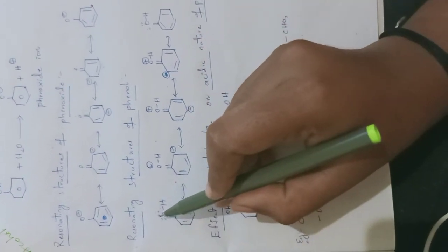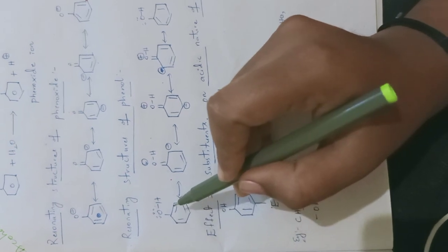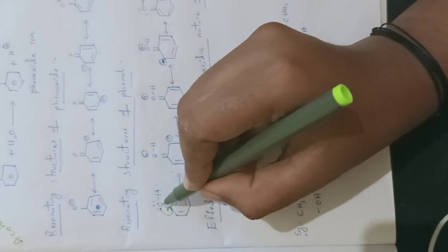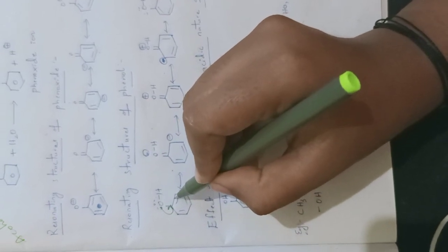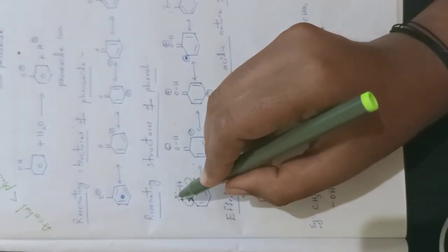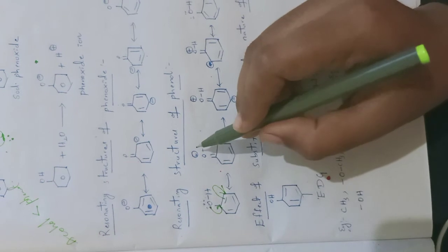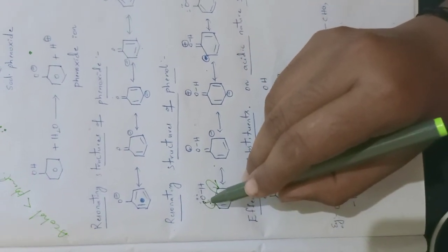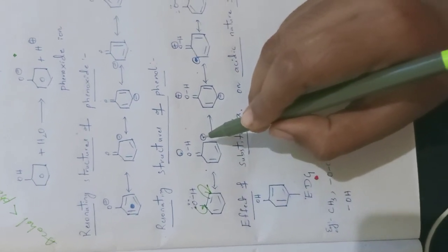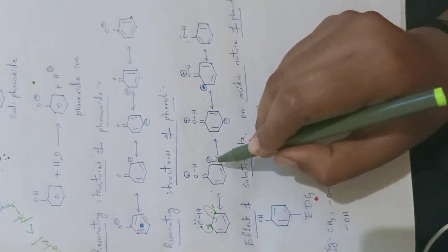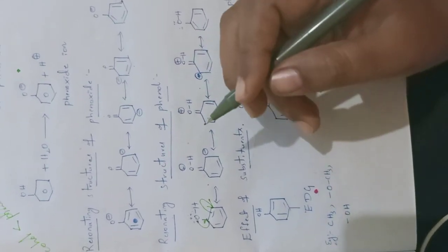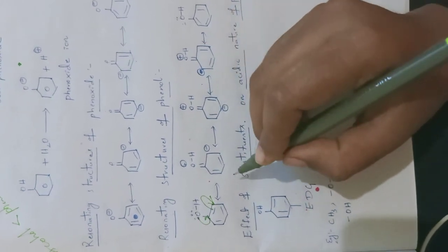Phenol contains oxygen with two lone pairs of electrons. When this lone pair of electrons makes a pi bond between carbon and oxygen, this pi bond moves to the adjacent carbon atom. Then this carbon gets a negative charge, and oxygen gets a positive charge — because oxygen is losing electrons. This carbon gained electrons, so a negative charge is created. Now this negative charge will not be stable because adjacent pi bonds are still available, so it again participates in delocalization with adjacent pi bonds.